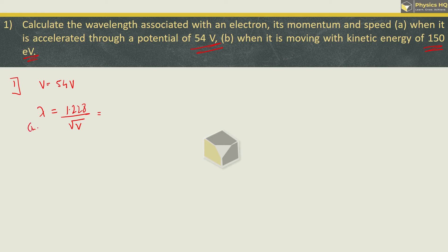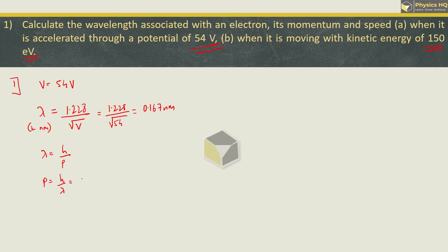This gives the wavelength in nanometers, where nanometer is 10 raised to minus 9. So 1.228 divided by root of 54 gives us 0.167 nanometer as the wavelength. Then to find momentum, we use de Broglie's wavelength formula, where lambda is given by h by p. Here h is Planck's constant and p is momentum, so p equals h by lambda. Substituting: 6.63 × 10⁻³⁴ divided by 0.167 nanometer (10⁻⁹), using log we get momentum as 39.7 × 10⁻²⁵ kg·m/s.